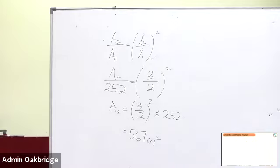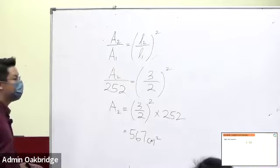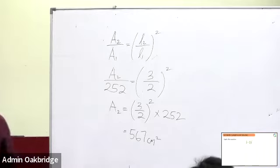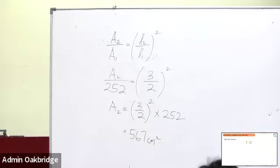The next one: length and volume. We have covered similarity within length, and within length and areas. Now it's length and volume. We should apply this equation: instead of squaring the L2 over L1, now you cube it — cube the L2 over L1, because it is volume.